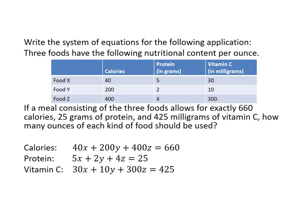If a meal consisting of the three foods allows for exactly 660 calories, 25 grams of protein, and 425 milligrams of vitamin C, how many ounces of each kind of food should be used? Using this information, we can build three equations: one equaling 660 for the total calories, one equaling 25 grams for the protein, and one equaling 425 milligrams for the vitamin C.